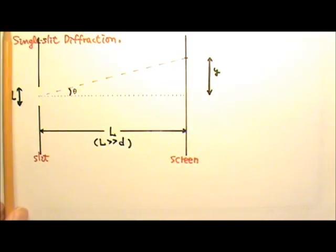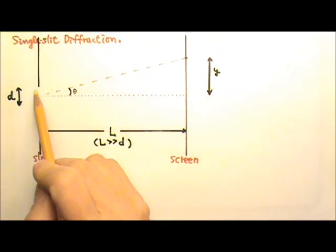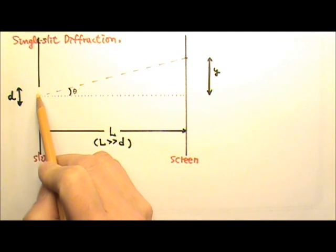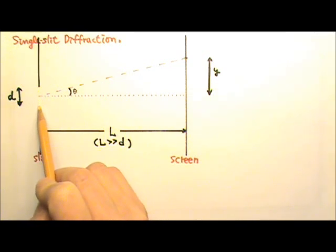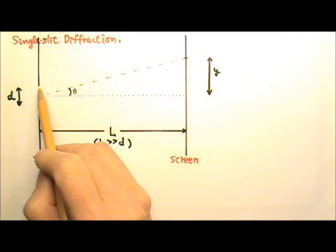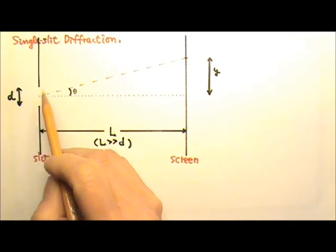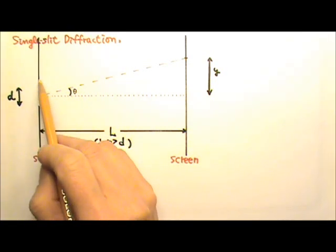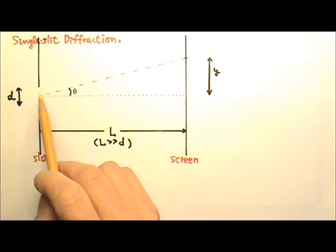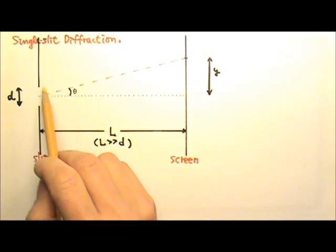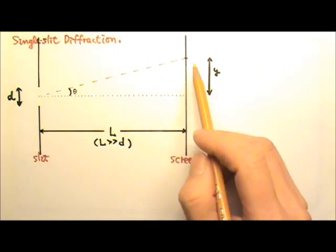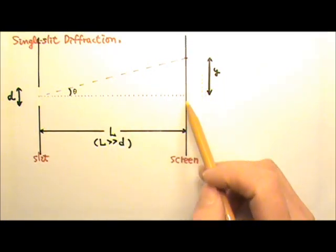When a wave front comes in, every single point on the wave front will be a new wave source. So we would have lots and lots — actually an infinite number — of new wave sources, and every single wave source gives us a new wavelet coming out. All these wavelets will interfere to give us the interference pattern on the screen.